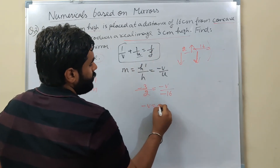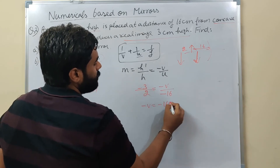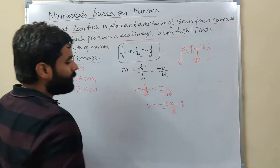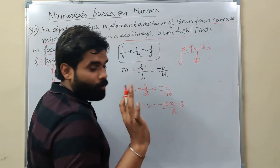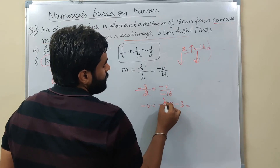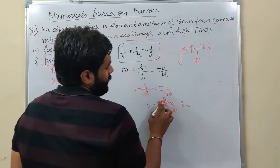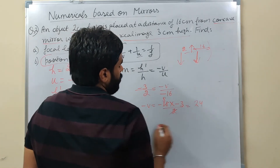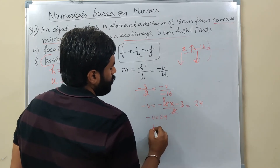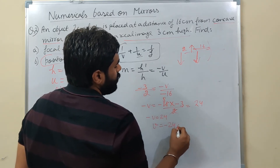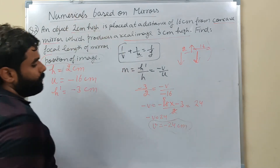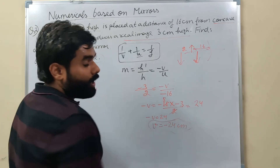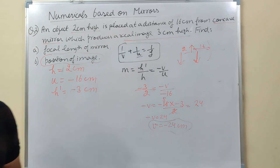Cross-multiplying: -V = (-16) × (-3) / 2. Minus times minus gives plus: 16 × 3 = 48, divided by 2 = 24. So -V = 24, meaning V = -24 cm. Write the unit - centimeter. V = -24 cm, so the image is formed 24 cm in front of the mirror.